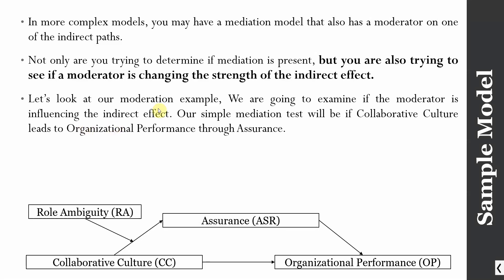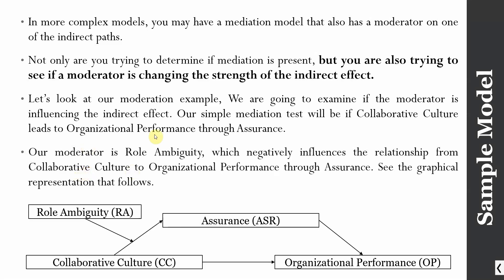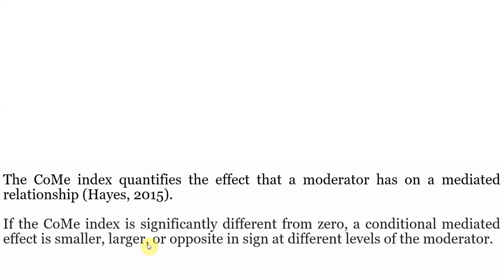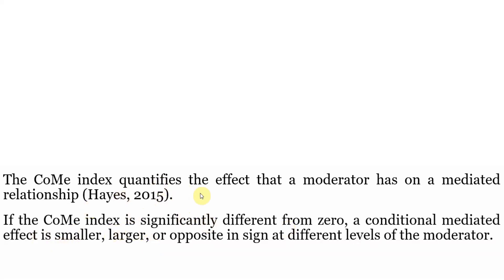In our example, we are going to examine if the moderator is influencing the indirect effect. Our simple mediation test will be whether collaborative culture leads to organizational performance through assurance. Our moderator is role ambiguity, which negatively influences the relationship from collaborative culture to organizational performance through assurance — that is, higher role ambiguity will weaken the indirect effect. The Index of Moderated Mediation is utilized to assess whether your indirect effect is being moderated. If this index is significant, you can say that your indirect effect is being moderated, so you need to calculate your Index of Moderated Mediation.